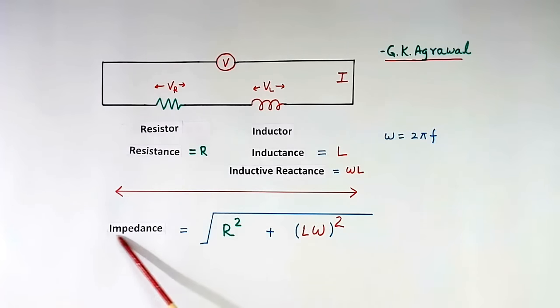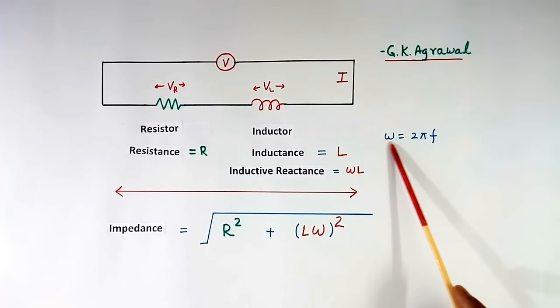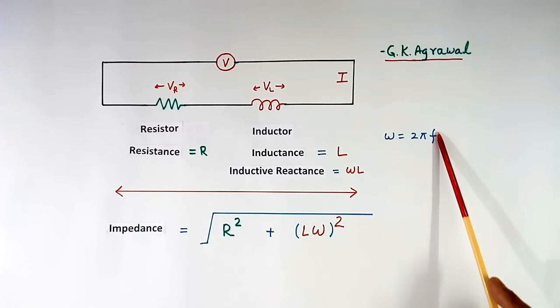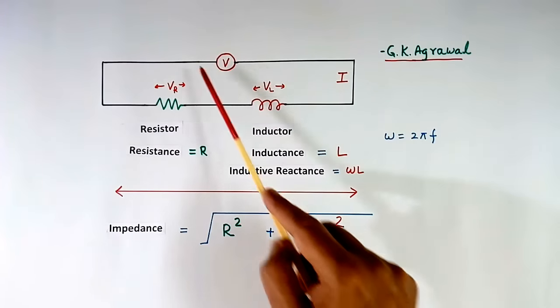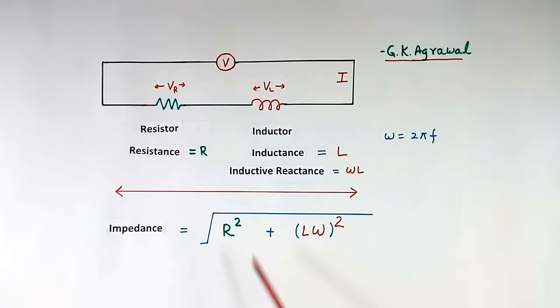The value of impedance depends upon R and ωL, where ω equals 2πF, and F is the frequency of the AC supply.